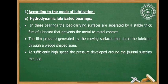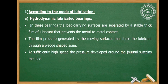The first group according to the mode of lubrication — the first type is hydrodynamic lubricated bearings. In these bearings, the load-carrying surfaces are separated by a stable thick film of lubricant that prevents metal-to-metal contact. The film pressure is generated by the moving surfaces that force the lubricant through a wedge-shaped zone, and at sufficiently high speed, the pressure developed around the journal sustains the load.